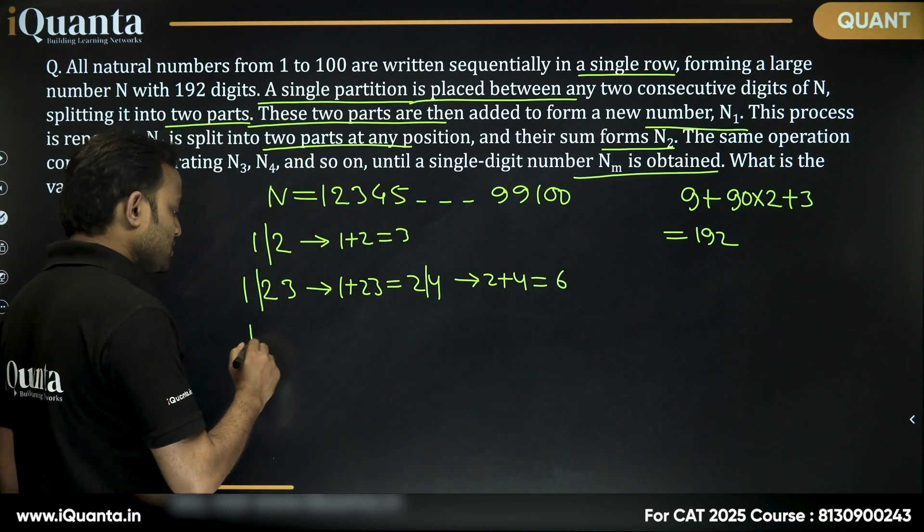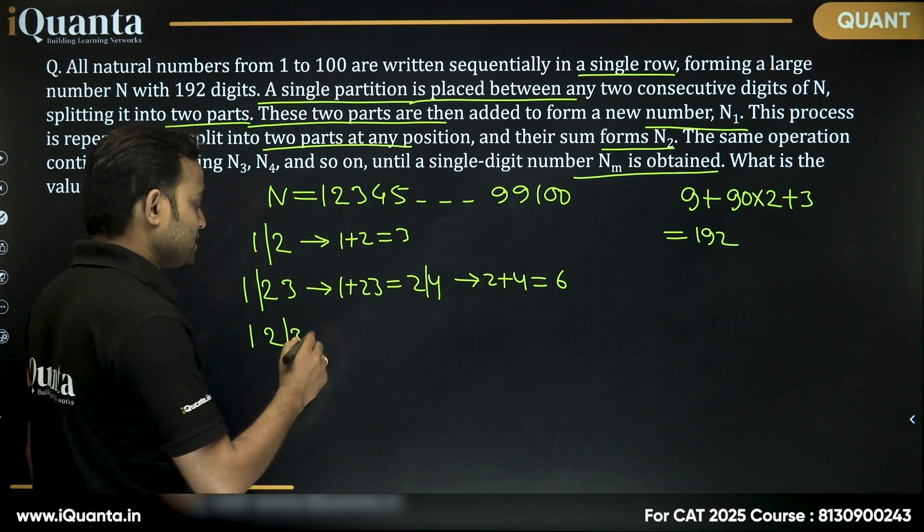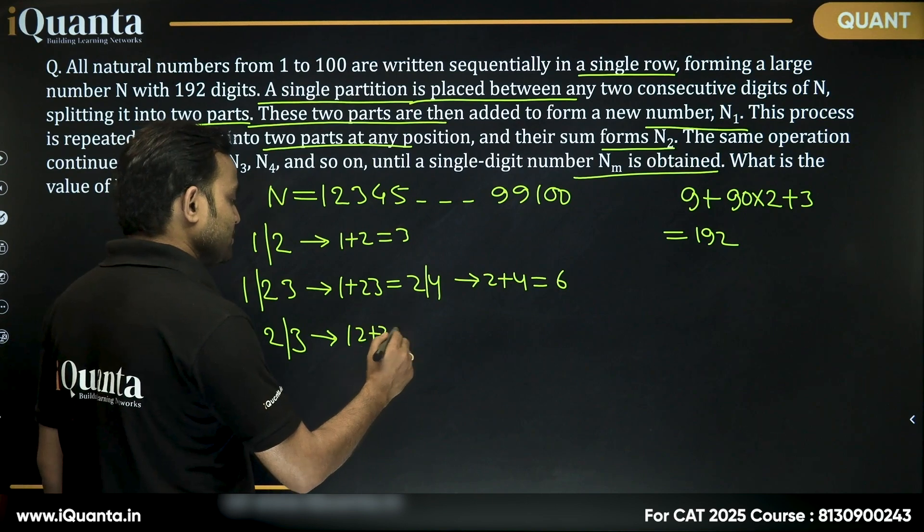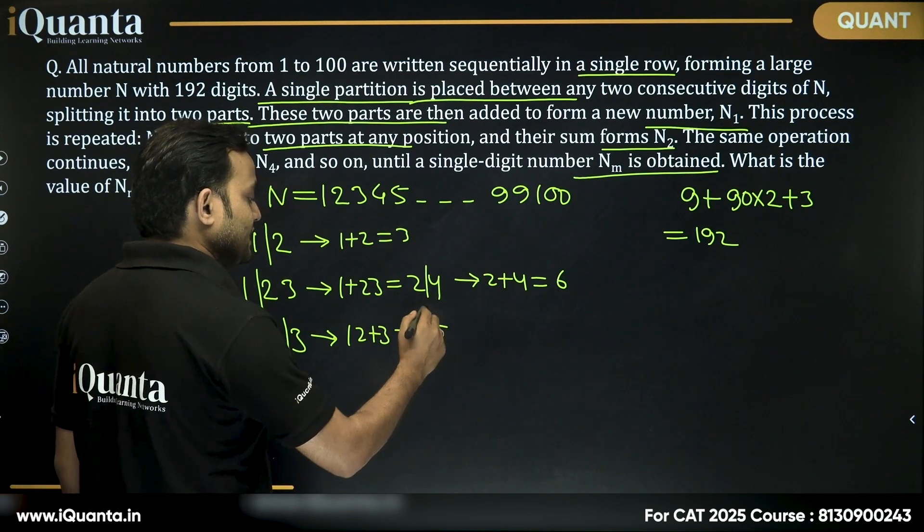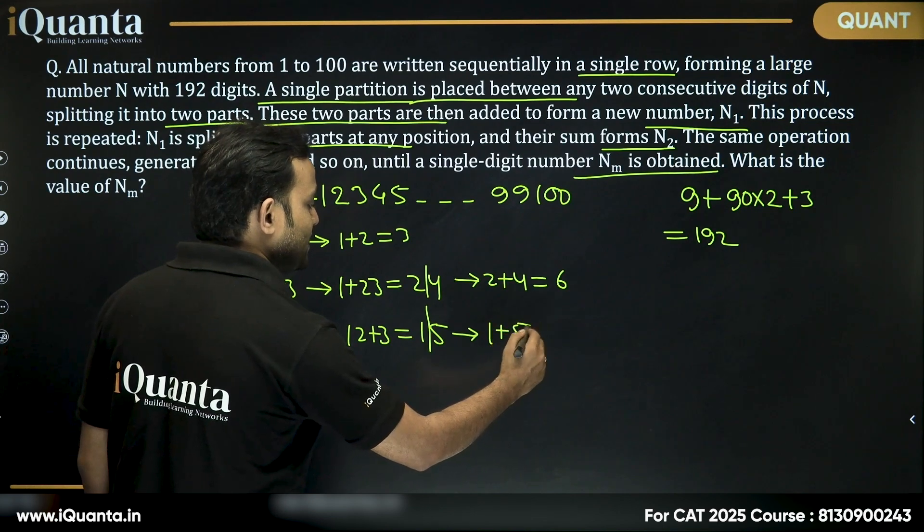Now, we can also put the partition instead of between 1 and 2, I can put it between 2 and 3. Then we are getting 12 plus 3, which is equal to 15. And again, if you put the partition between 1 and 5, then we get 1 plus 5 is equal to 6.